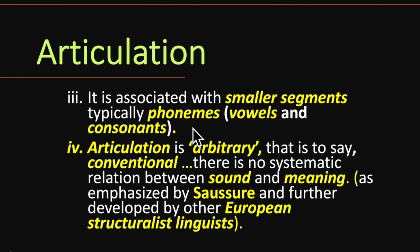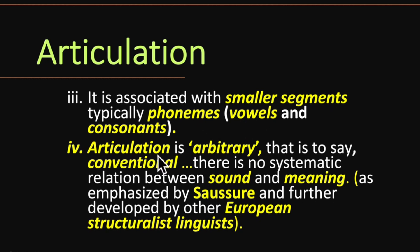Articulation is associated with smaller segments, typically phonemes — vowels and consonants. When we articulate, vowels and consonants play their role. So articulation deals with smaller segments, and those smaller segments are phonemes, which include vowels and consonants. However, articulation is arbitrary — that is to say, conventional. There is no systematic relation between sound and meaning.